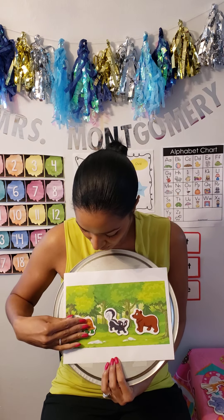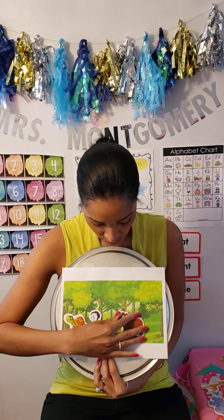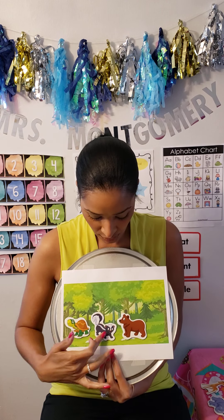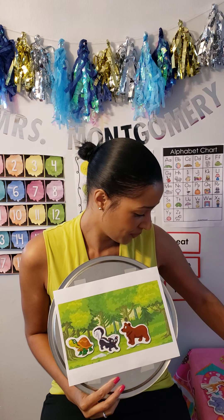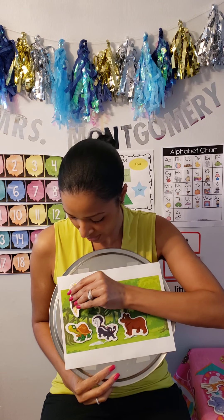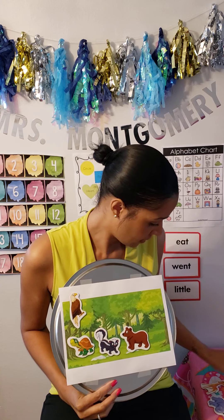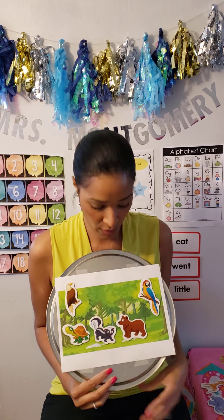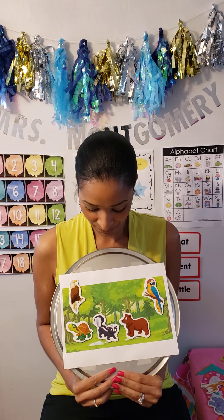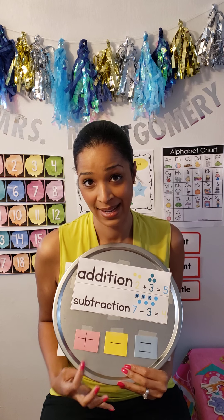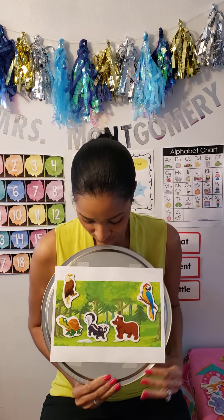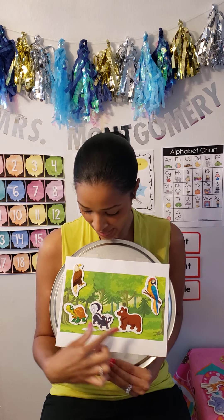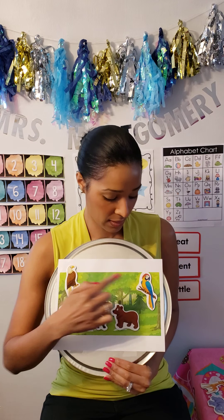Now we have three animals in the forest — one, two, three — and two more animals join them. Did we get more animals or did we get less? More animals. So we're going to be adding. We had one, two, three animals playing together in the forest and two more animals came — an eagle and a parrot.